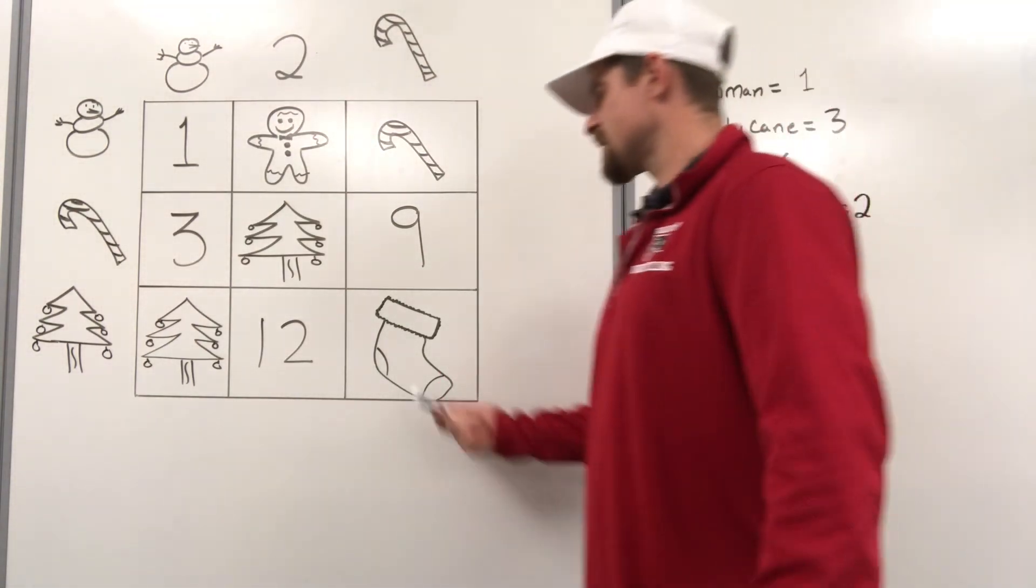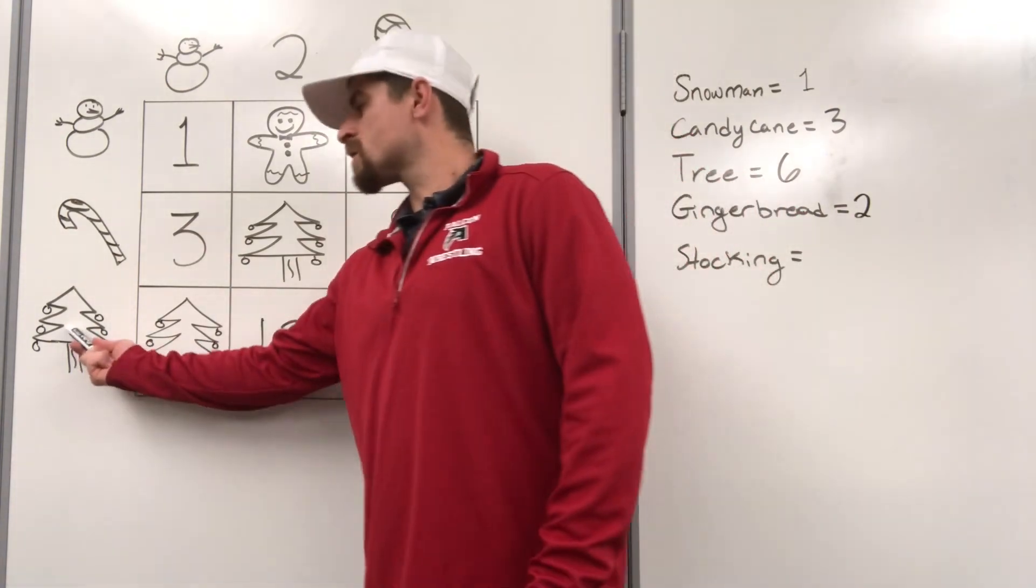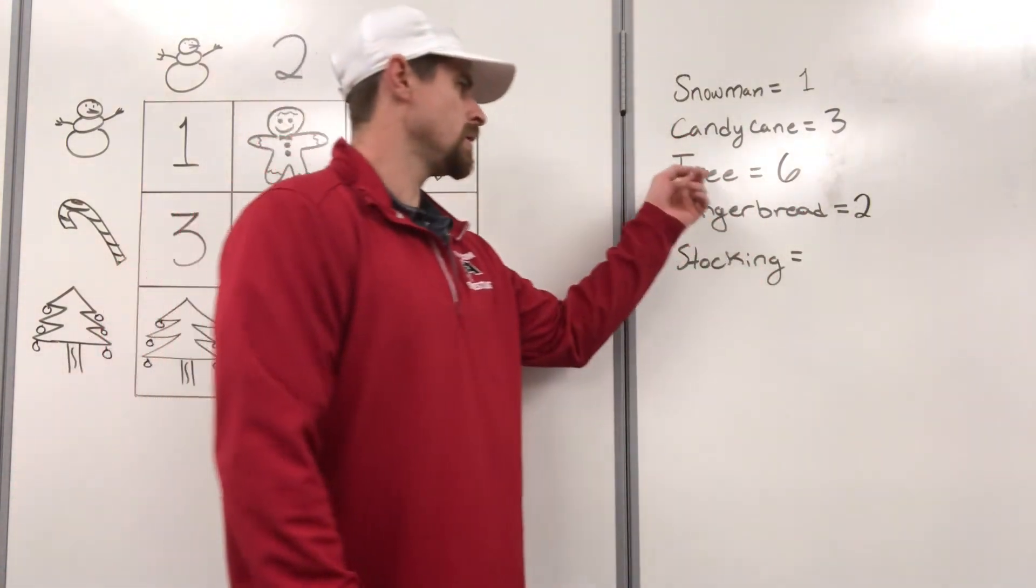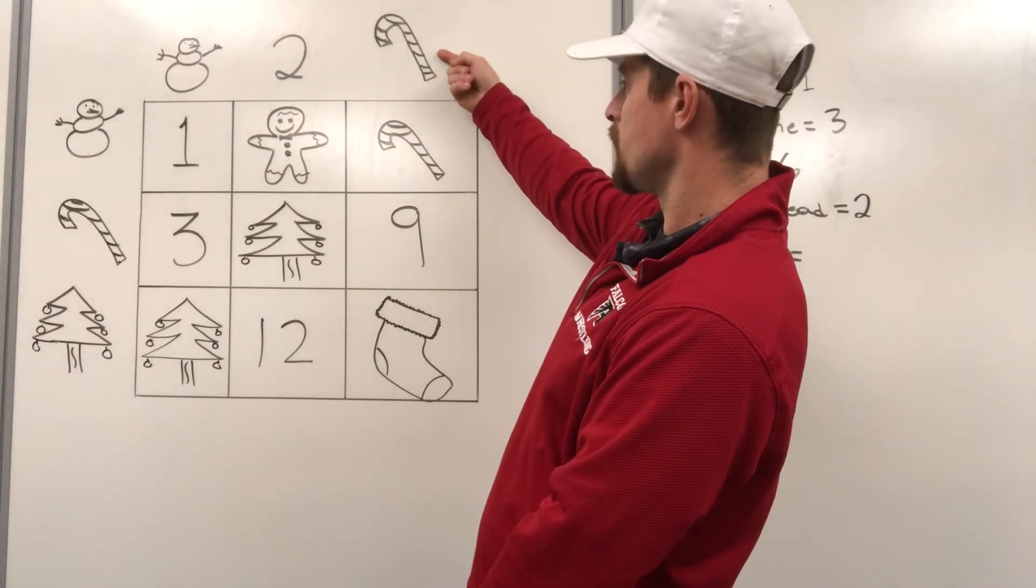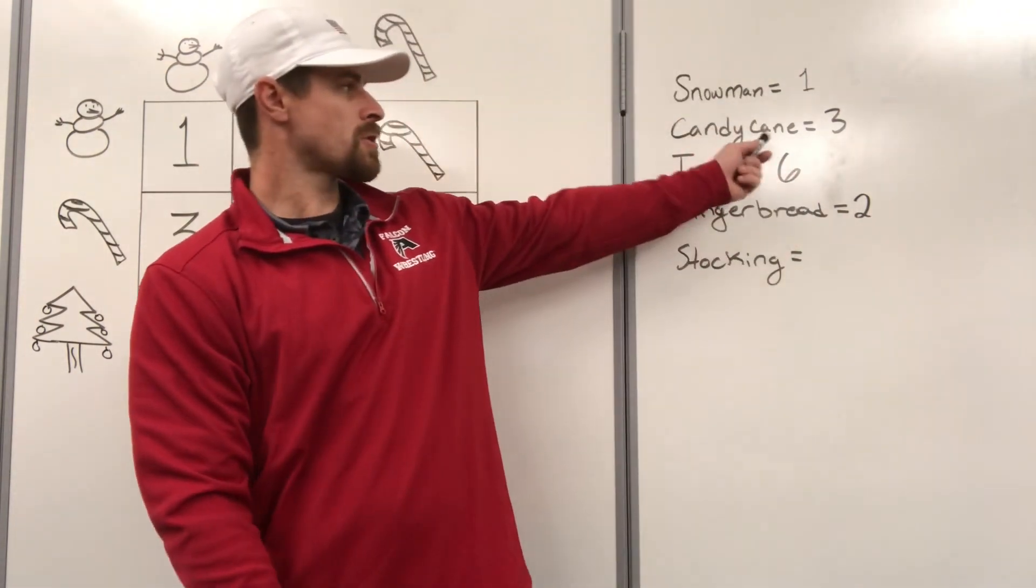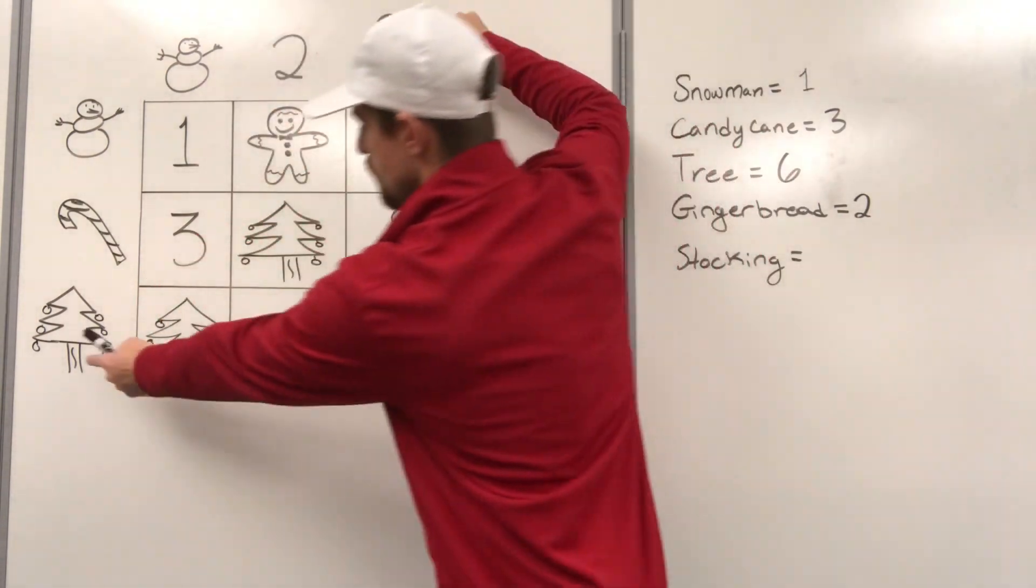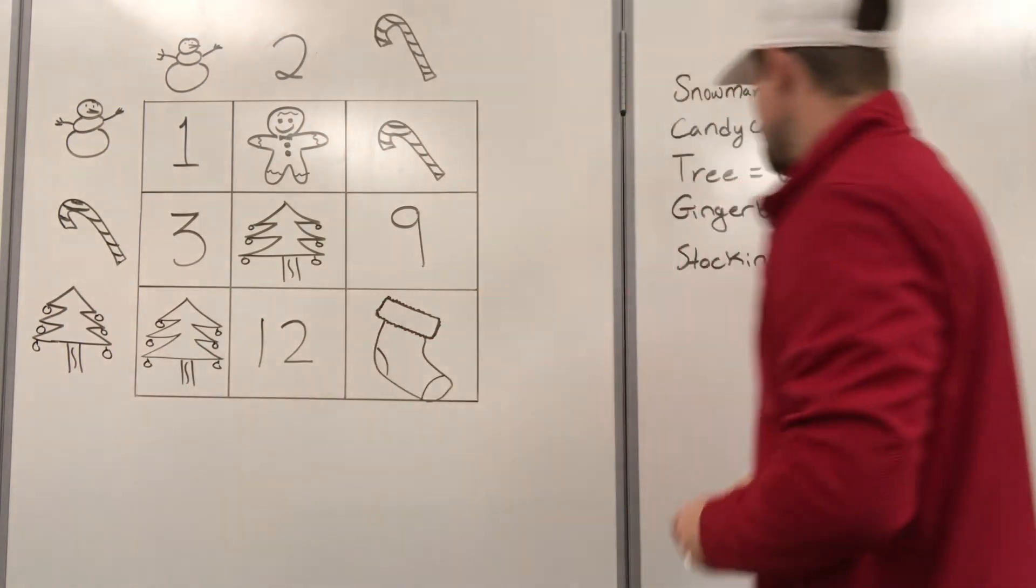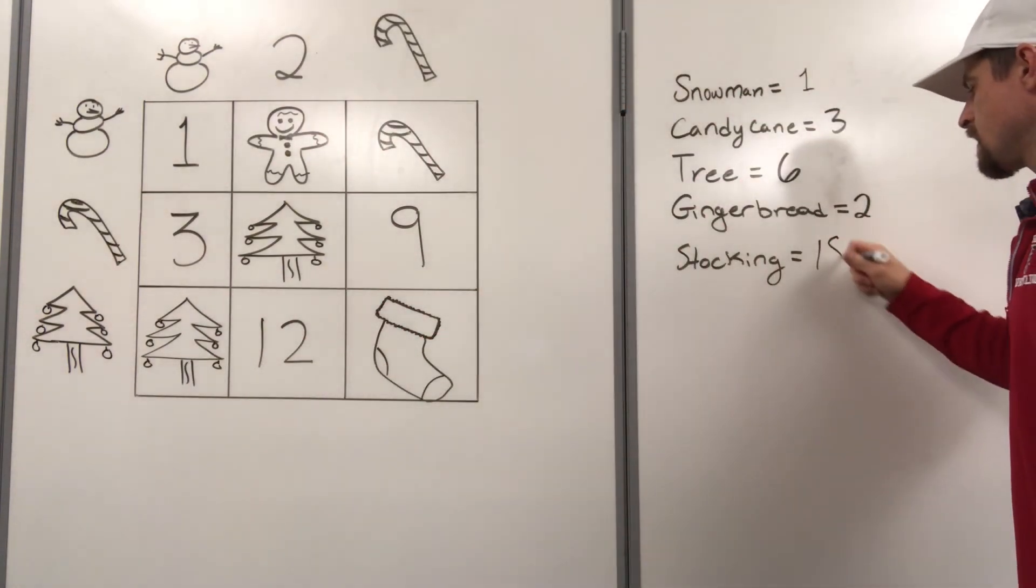And last but not least is stocking. Do we know what the Christmas tree is worth? Yes, we do. It's six. Do we know what the candy cane is worth? Yes, we do. It's three. So three times six makes stocking. Stocking must be 18.